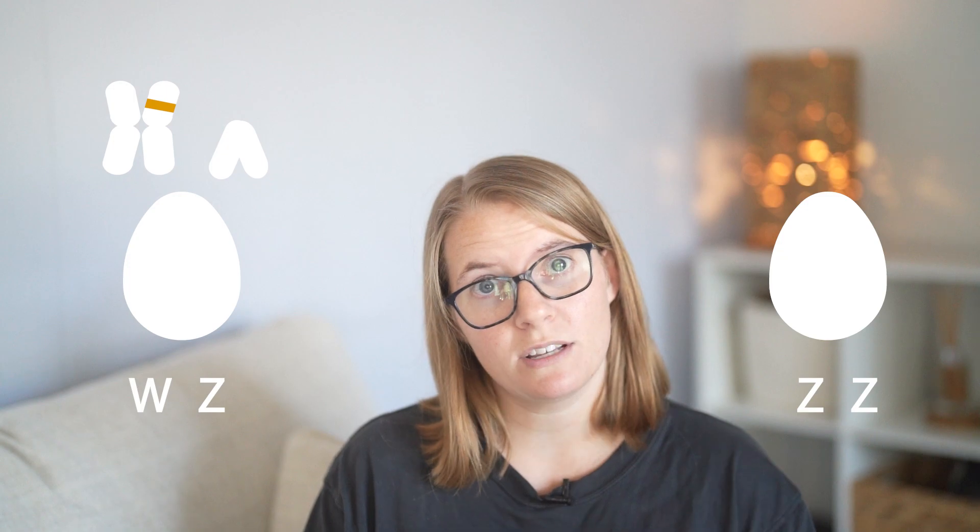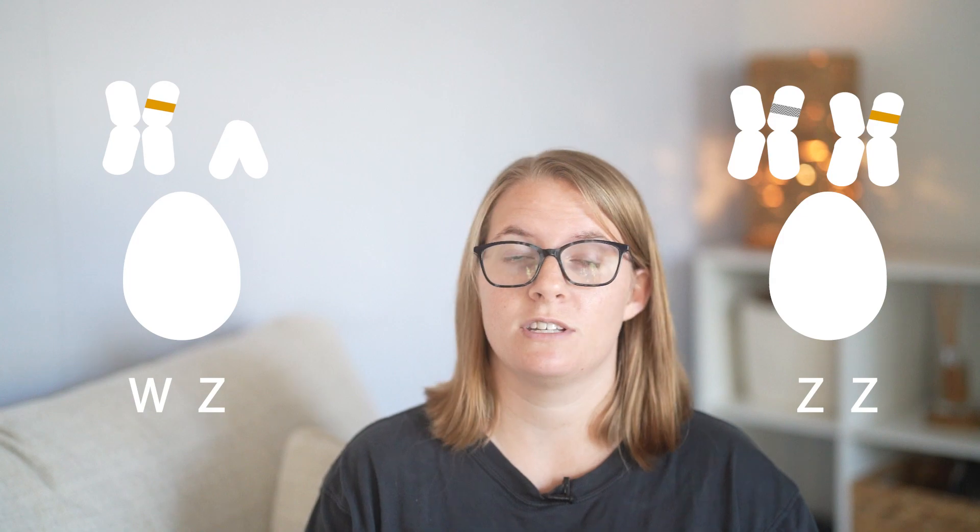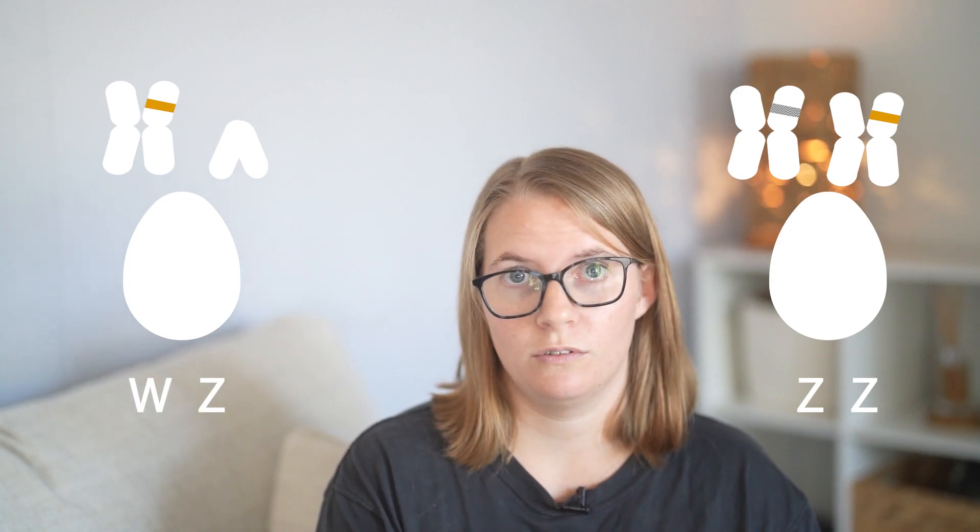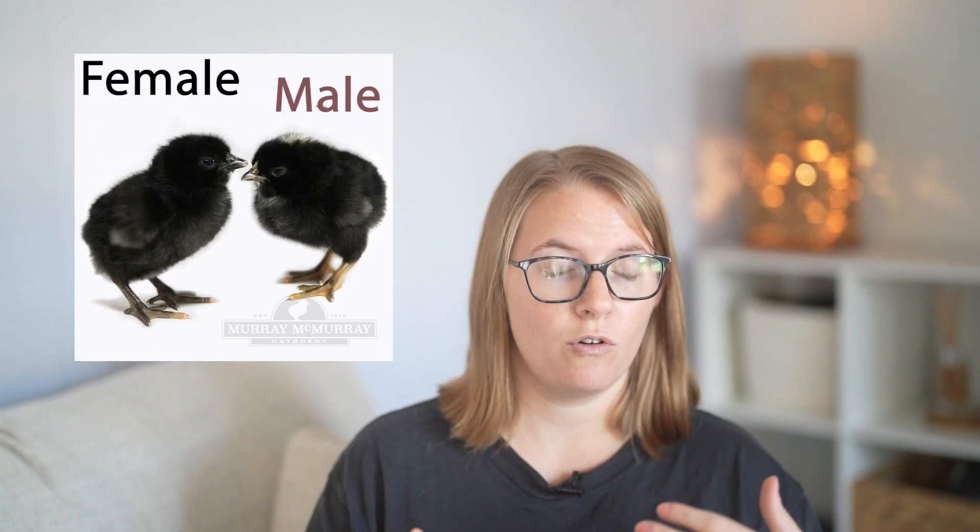Those WZ hens are going to be solid colored. As a chick, in this example, they're probably going to be black with no other color on their down feathers — just a little fluffy black chick. The males, on the other hand, are going to have a Z from the mother (which has the barring gene) and a Z from the father (which does not), giving us a heterozygous barred cockerel. Barred chicks in this example will be black down with a white spot on the head. So right out of the egg, all the ones with a dot on the head are cockerels.